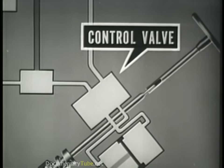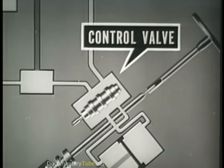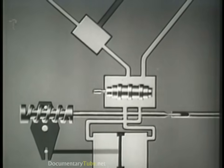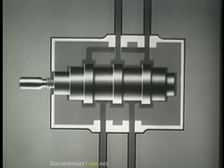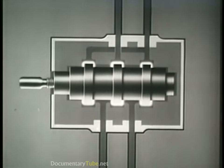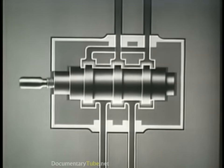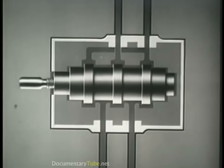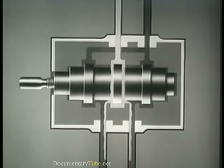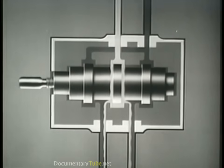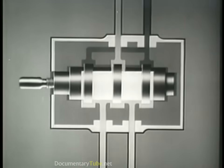The control valve is the heart of the hydraulic steering system. It has a spool which directs and controls the flow of fluid to the power cylinder. With the fluid removed, let us look at the internal construction of the control valve. The spool has lands which control the flow of fluid through the passageways to the power cylinder. The fluid enters the control valve through the inlet port and flows around the spool in channels leading to the power cylinder. After the cylinder has been filled, all fluid then flows to the reservoir.